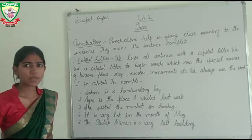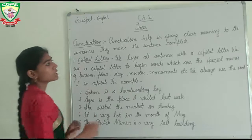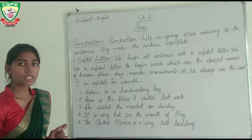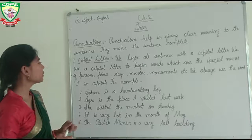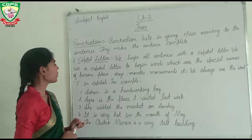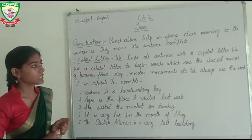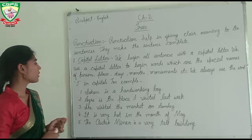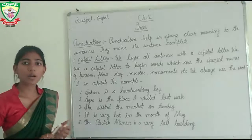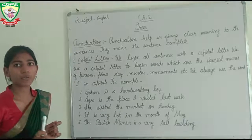There are many types of punctuation. First is the capital letter. We begin all sentences with a capital letter. We use a capital letter to begin words which are the special name of a person, place, day, month, monuments, etc. We always use the word 'I' in capital. The word I is always written as a capital letter.